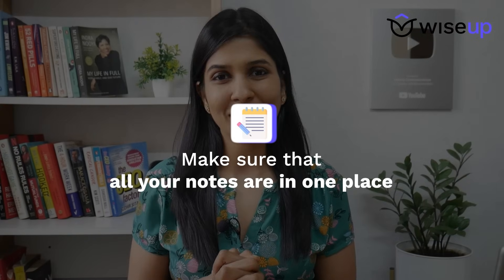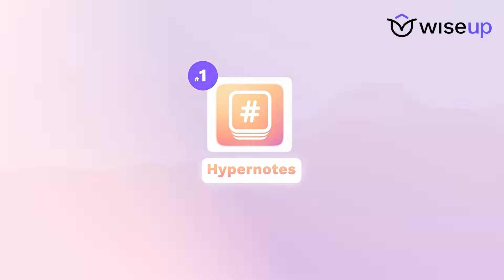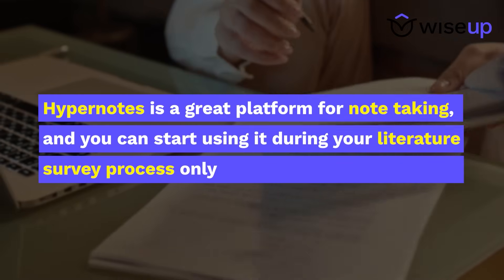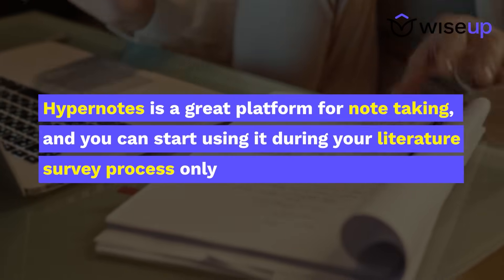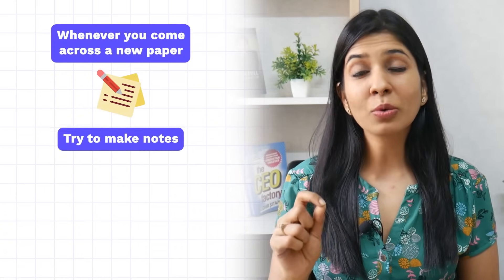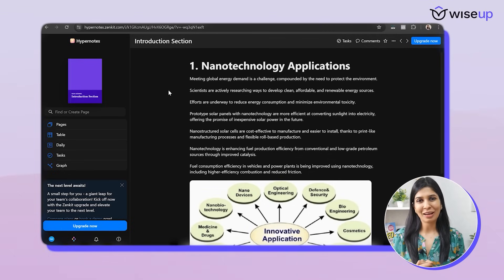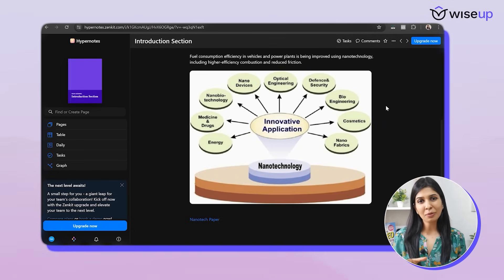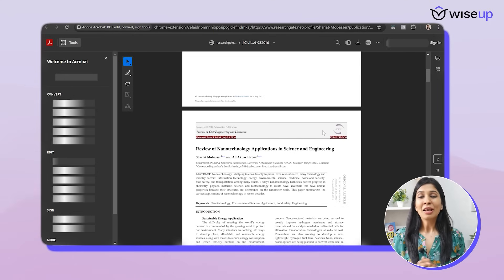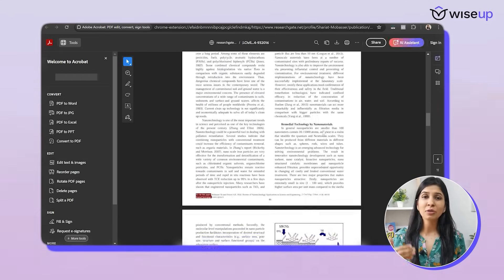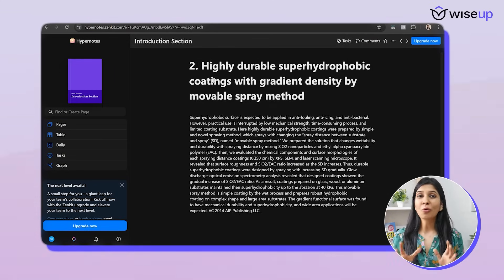The first thing you should do when writing a research paper is to make sure that all your notes are in one place. And for that, you can use Hypernotes. Hypernotes is a great platform for note-taking and you can start using it during your literature survey process. Whenever you come across a new paper, try to make notes and save it in Hypernotes, so that later on when you sit down to write your research paper, you can refer to all these notes.